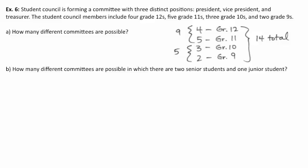Nine of them happen to be from a senior grade, five from a junior grade. With no restrictions, we could have 14 options for president, 13 options for vice president, and 12 options for treasurer. Of course, we can't repeat because a person can't do more than one job. So we'd have 2,184 total different committees of president, vice president, and treasurer.